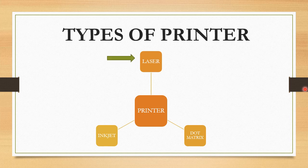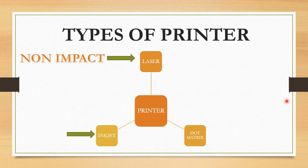Laser printer belongs to the non-impact category, and the speed of this printer is given in ppm, that is pages per minute. Inkjet printer also belongs to the non-impact category, and the speed of this printer is given in lpm, that is lines per minute.